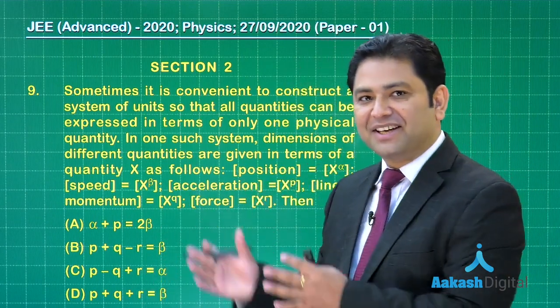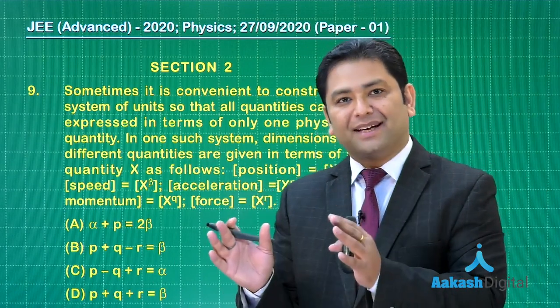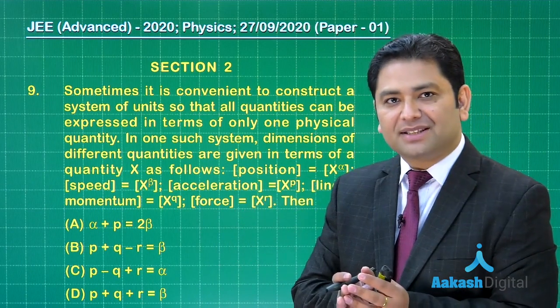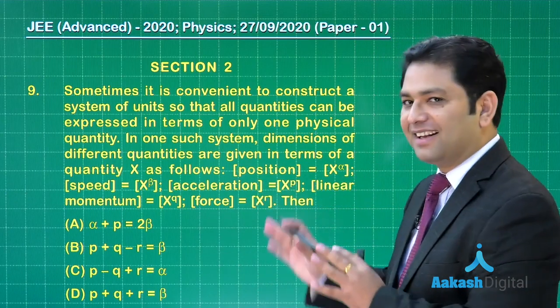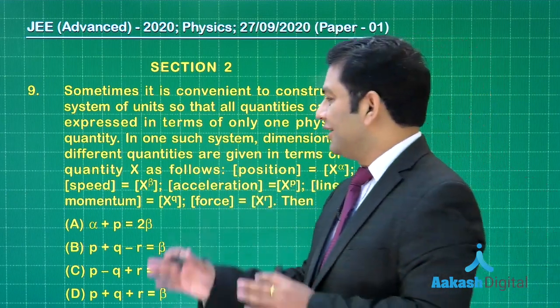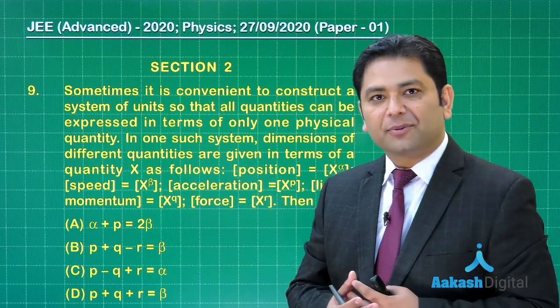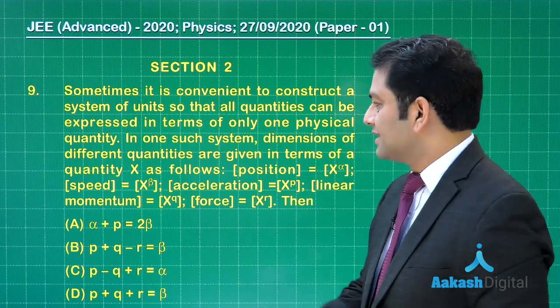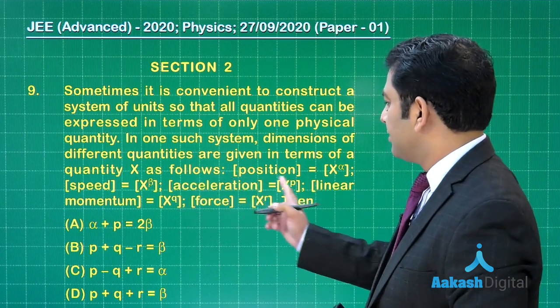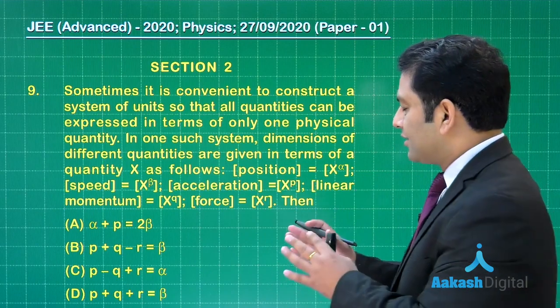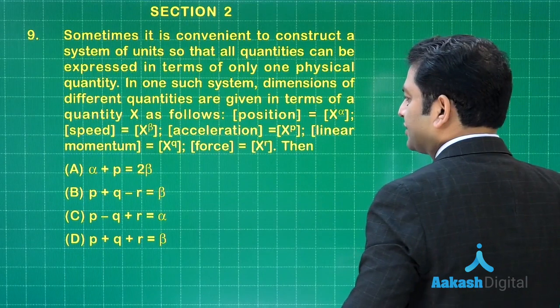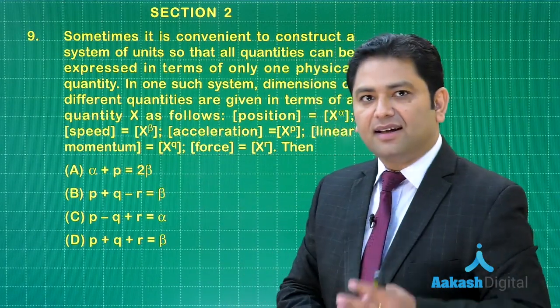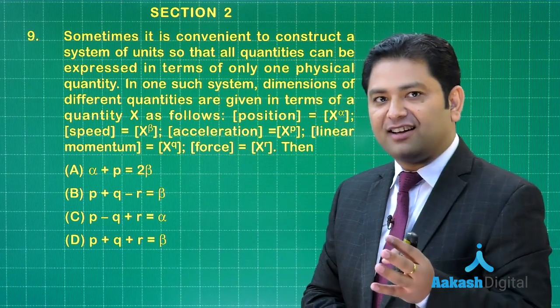The ninth question is from units and measurement, and dimension has appeared. This is almost an open secret that you can expect at least one question from this topic. It is always the innovative idea of JEE Advanced that they give questions related to dimension but with always some new innovation applied there. This question is a nice testimony of that. What this statement says is that sometimes it becomes convenient to represent the dimensions of physical quantities in terms of one quantity. Here that one quantity is taken as X, and position, speed, acceleration, momentum and force are given in this manner. Based on this we got to relate α, p, β, p, q, r. If you see, first option is a relation between α, p and β. The second and fourth is to relate p, q, r and β, and third is to relate p, q, r and α.